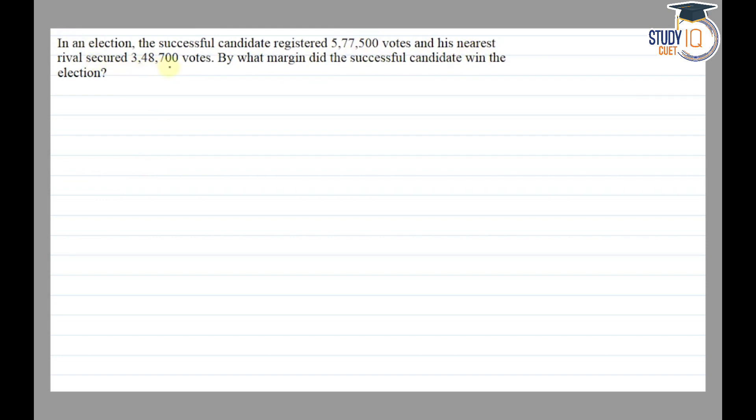secured 3,48,700 votes. By what margin did the successful candidate win the election? So firstly, we have given number of votes secured